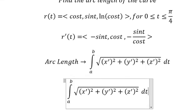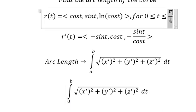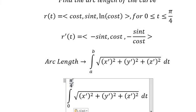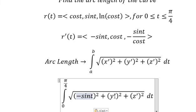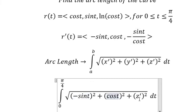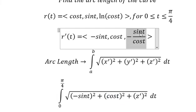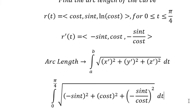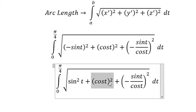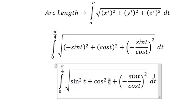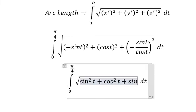Here a equals zero and b equals π/4. We substitute: the x-component is negative sin(t), the y-component is cos(t), and the z-component is negative sin(t) over cos(t). Squaring gives us sin²(t), cos²(t), and sin²(t)/cos²(t) which equals cos²(t) — that is tan²(t).